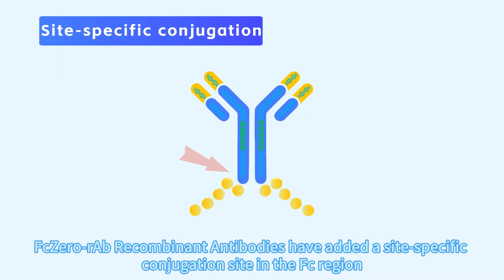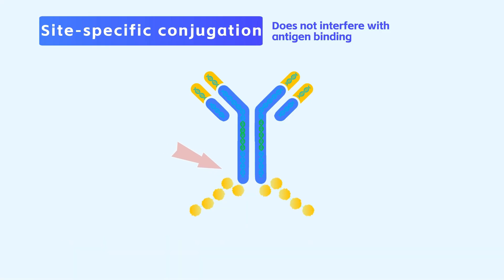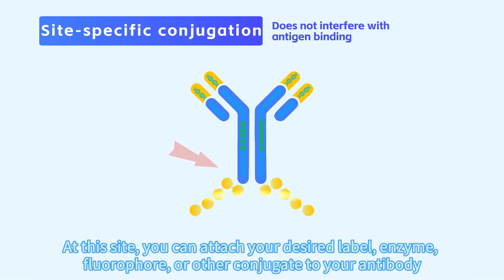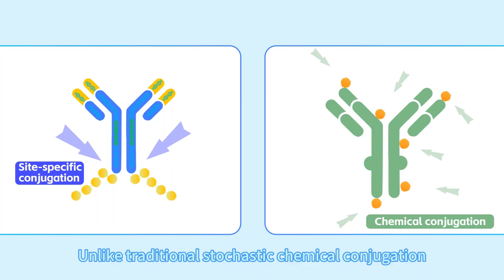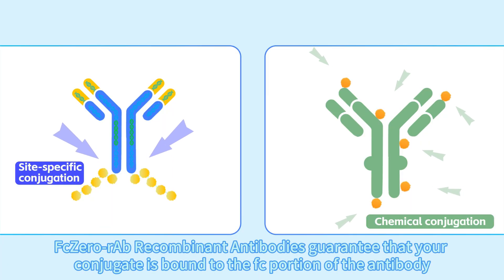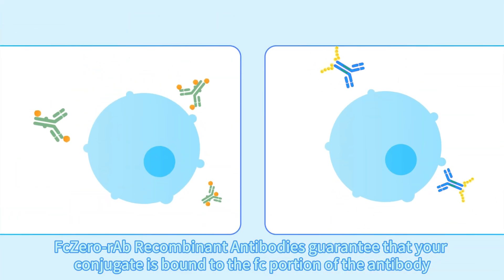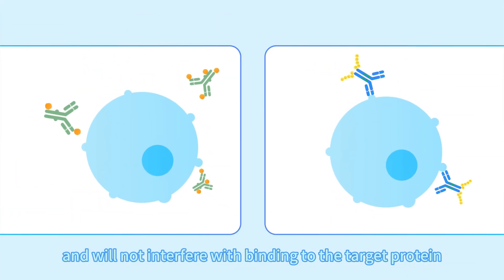Second, FCo-RAB recombinant antibodies have added a site-specific conjugation site in the FC region. At this site, you can attach your desired label, enzyme, fluorophore, or other conjugate to your antibody in a stoichiometric and site-specific manner. Unlike traditional stochastic chemical conjugation, FCo-RAB recombinant antibodies guarantee that your conjugate is bound to the FC portion of the antibody and will not interfere with binding to the target protein.